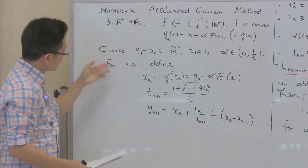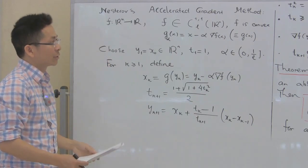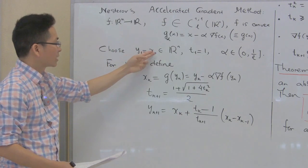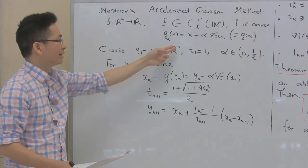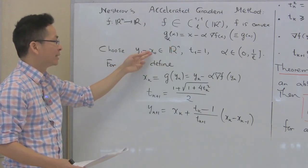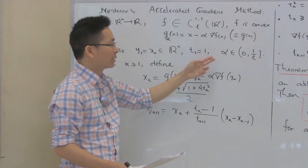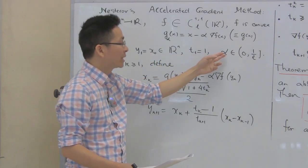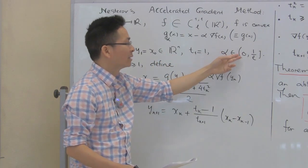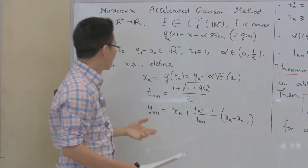The Nesterov accelerated gradient method works as follows. First, we choose a starting point x_0 in R^n, and let y_1 = x_0. Let t_1 = 1, and we pick a constant step size alpha in between 0 and 1/L.